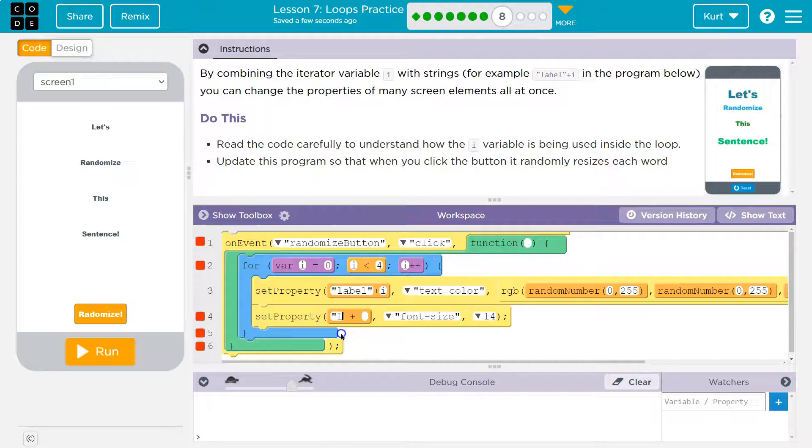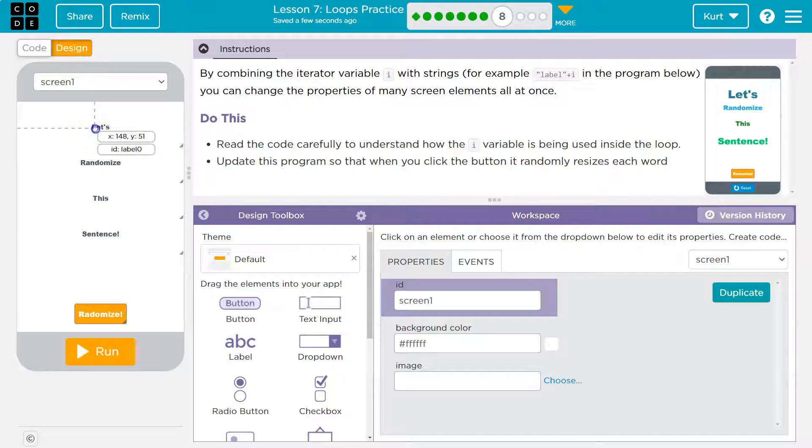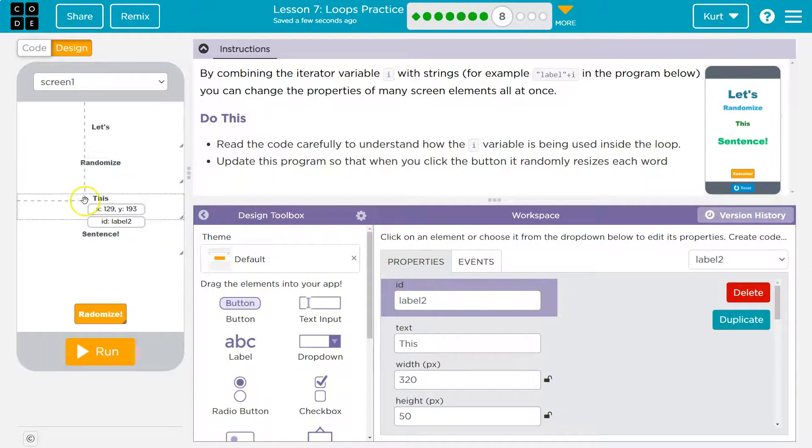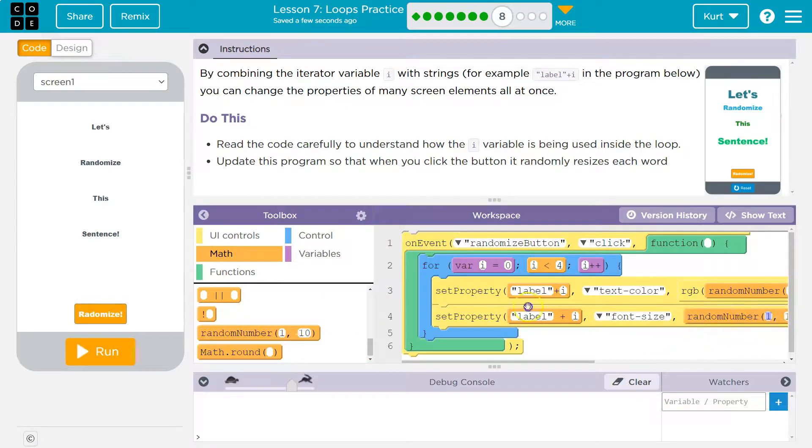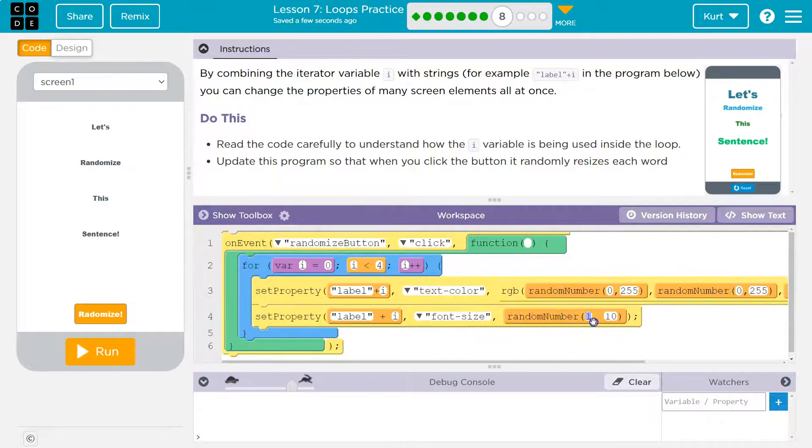Now, in here, I'm going to put label, because again, that's what each thing is being called. And i, because that's going to be the number, right? And so I can look in here, look. Label 0, label 1, label 2. So that's how I'm using this to pick out these things and change the font size. Oh, I lost my random number. Give me back my random. It doesn't seem like they give us a thing, so I'm going to say, I don't know, 10 to 30. Let's see what happens.